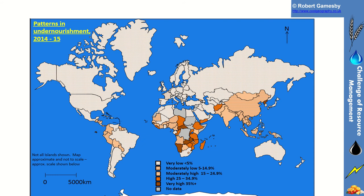That ties in with the map on undernourishment. You can see that it's very low across the richer nations, and then across large parts of that sub-Saharan African belt we've got very high levels of undernourishment, and that has a massive human cost.